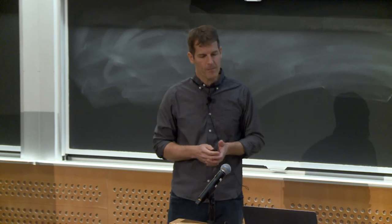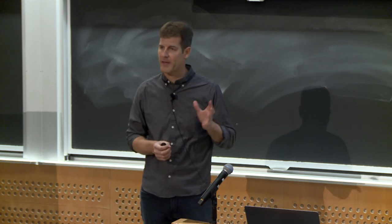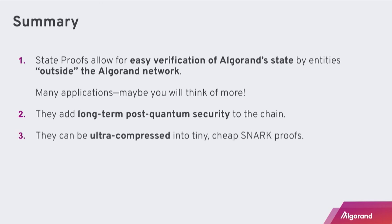Overall summary: state proofs are great. They will allow easy verification of Algorand state by entities outside the Algorand network, using just a tiny initial piece of trusted data. They add long-term post-quantum security to the Algorand chain so you can rely on the history even in a post-quantum future. And they can be ultra-compressed using tiny, cheap-to-verify SNARK proofs. Thank you very much — I'll be glad to take your questions.